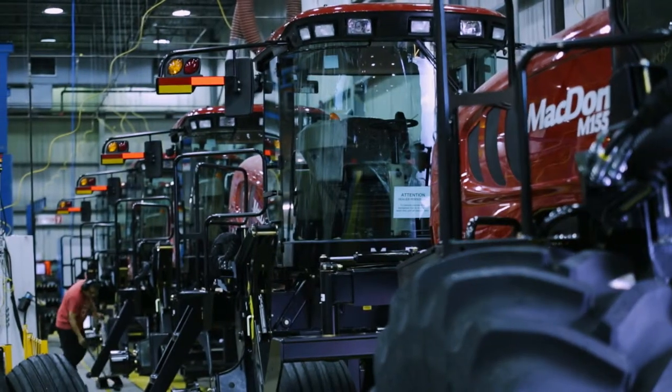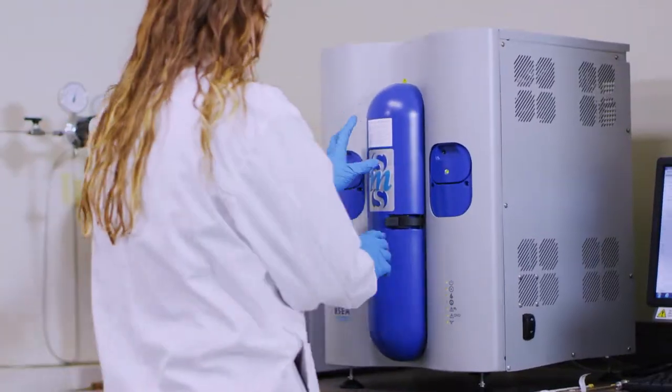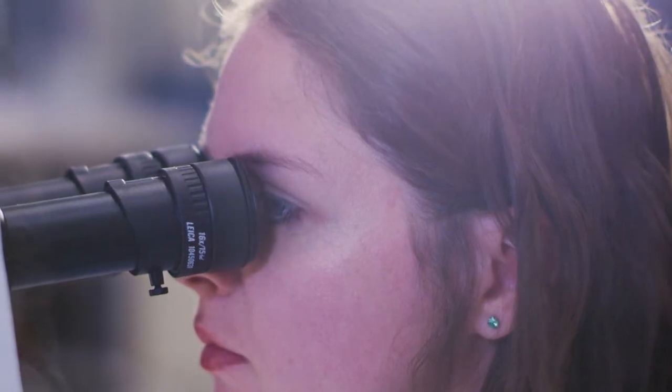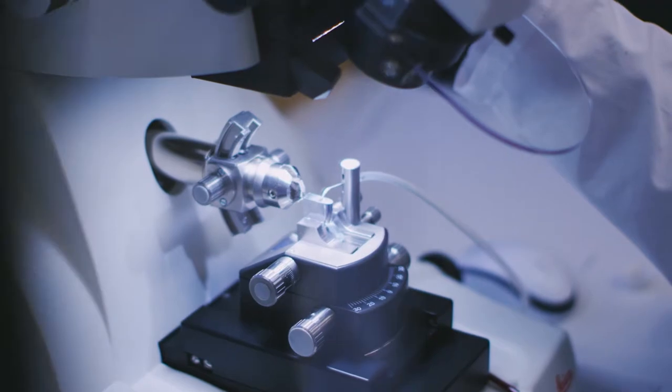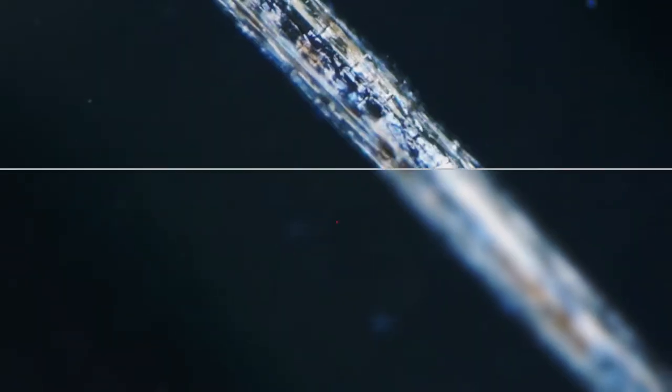In many cases, in order to understand something, you almost need to see it. That's one of the reasons we have invested in different types of microscopy, like scanning electron microscopy. This gives us high resolution and allows us to see things that are three nanometers. That's when we start to look at the chemistry of the fibers.